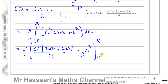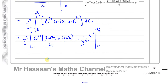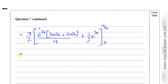Now I have to substitute the limits. I need more space, so let me continue. I'll simplify so we can proceed with ease, putting everything under one denominator to get (π/8) × [e^(2x)(sin(2x) + cos(2x) + 2)] between π/2 and 0.